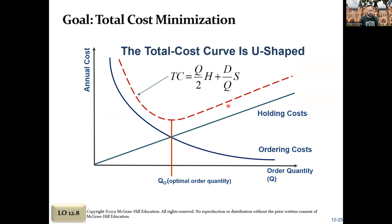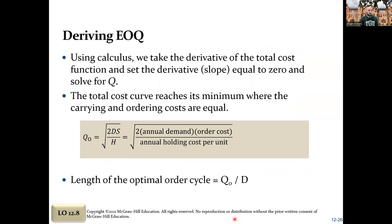To find Q, the formula is the square root of (2 times annual demand times ordering cost, divided by annual holding cost). It may look complicated, but it's straightforward: multiply 2 times demand times ordering cost, divide by holding cost, then hit the square root button on your calculator. All these numbers — demand, ordering cost, holding cost — are typically given to you. Once you see it in the practice problems video, you'll realize it's not complicated at all.